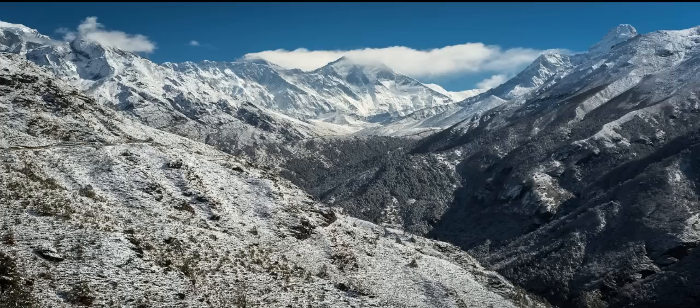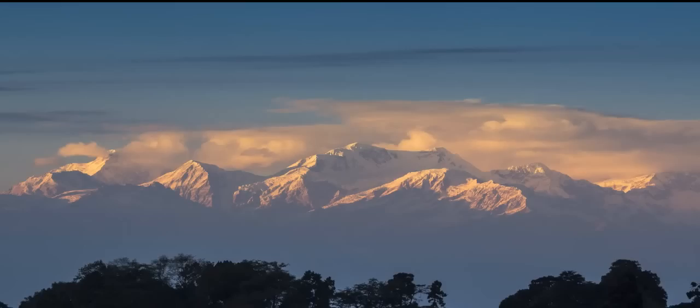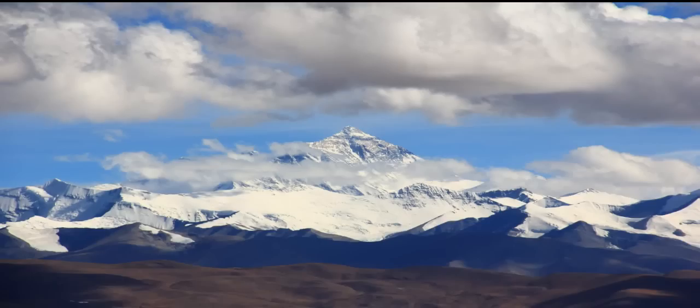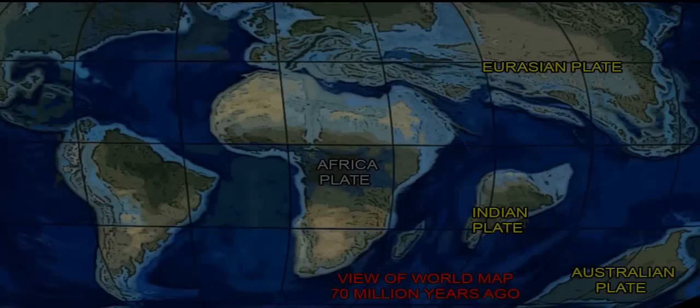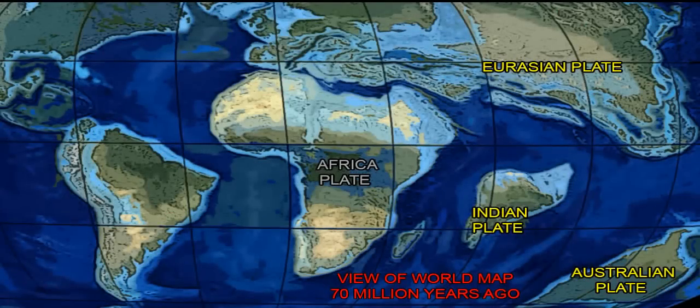The birth of the Himalayan range started about 70 million years ago. The Himalayan range is one of the youngest mountain ranges on earth, and the 6,000 kilometers plus journey of the Indian plate before its collision with the Eurasian plate started about 40 to 50 million years ago.